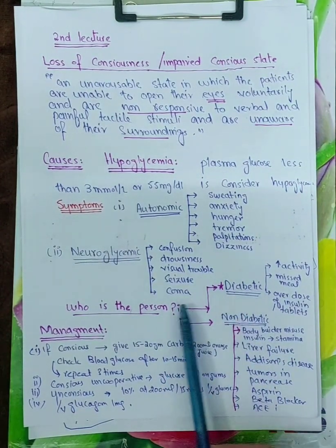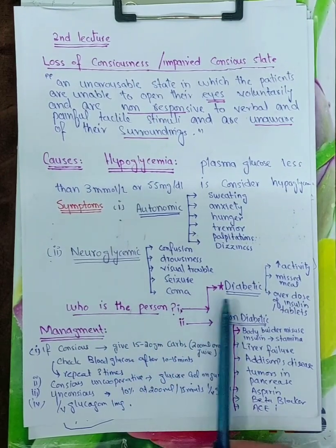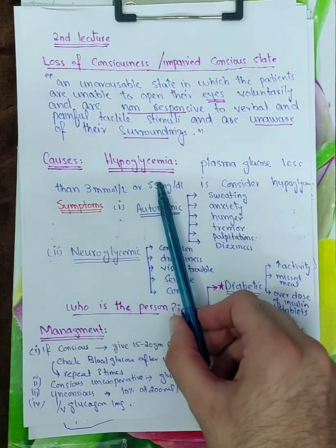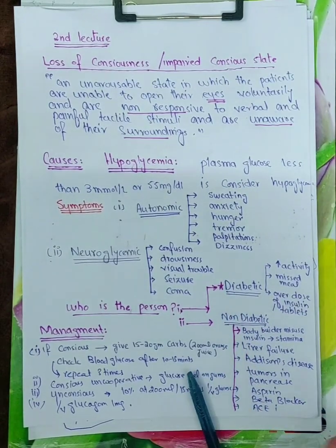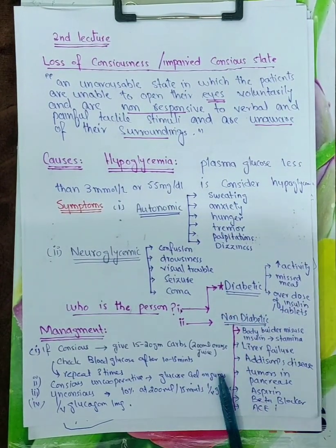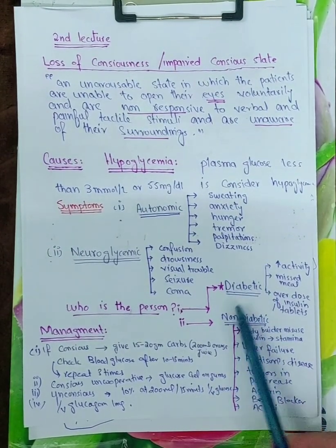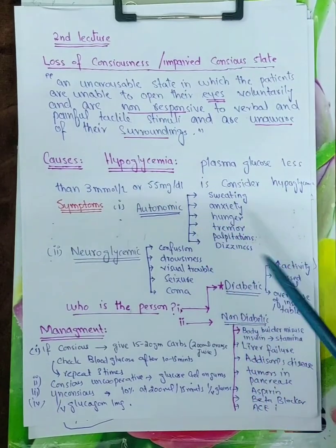So the first person who faces hypoglycemic state is diabetic. The patient might be diabetic, might not be diabetic, but majority of the patients are diabetic. So the diabetic patient, why do they go to the hypoglycemic state?